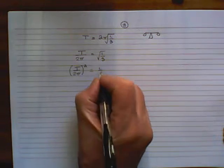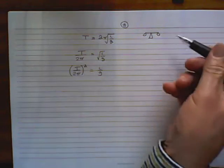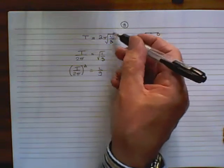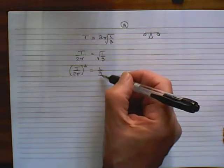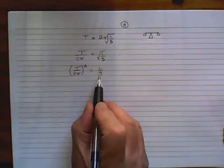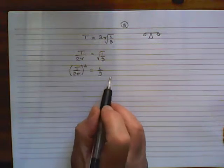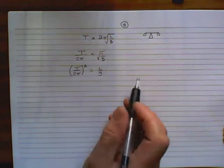This is T over 2π, squared, equals L over G. Now, here's the G that we really want. Gradually, we're getting down to the G. The trouble is, the G here is the denominator. Difficult to manipulate.